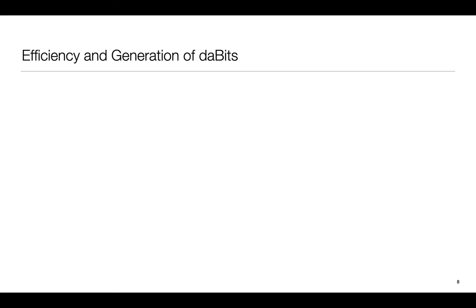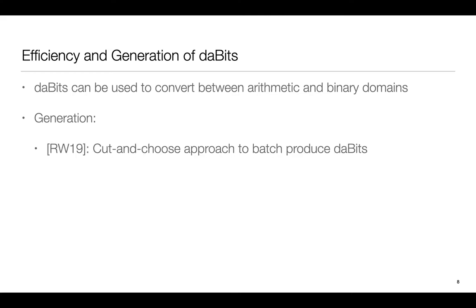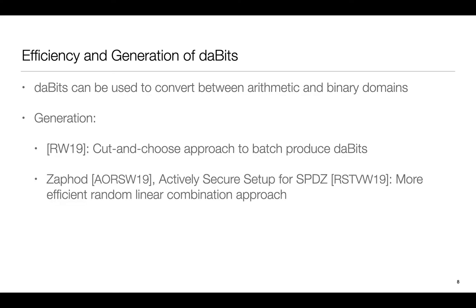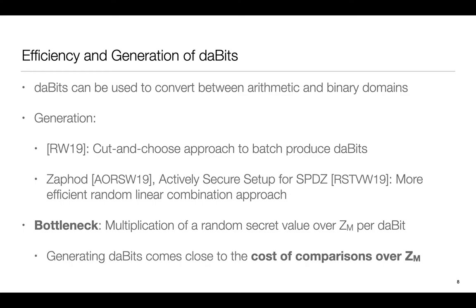These are some of the highlights of DABITS. DABITS are used to switch between arithmetic and binary domains and there's a lot of different ways to efficiently generate them. RW19 uses a cut and choose based approach to batch produce DABITS whereas follow-up works use a more efficient random linear combination based approach. The bottleneck in efficient generation is that we need to do multiplication of a random secret value over ZM per DABIT. Due to this the cost of creating a DABIT comes close to the cost of doing a comparison over ZM.